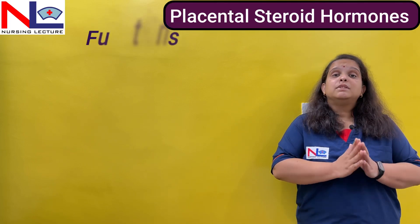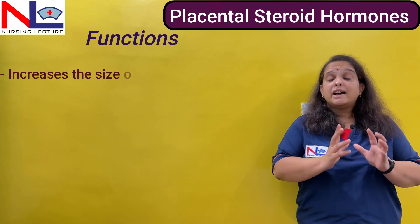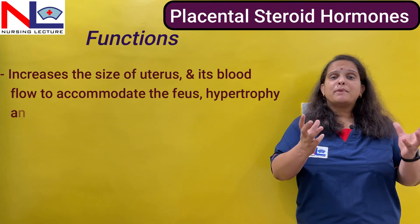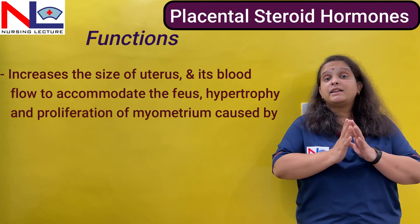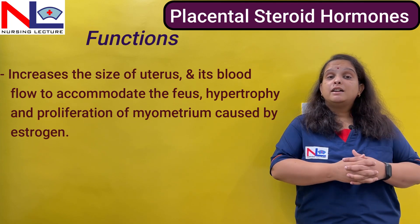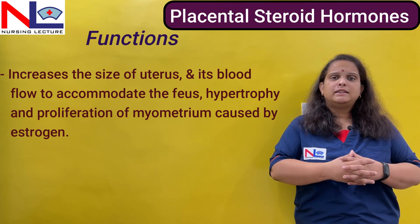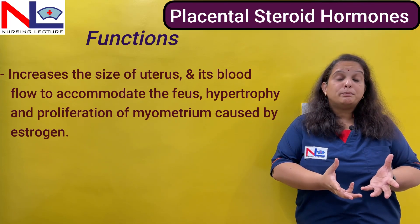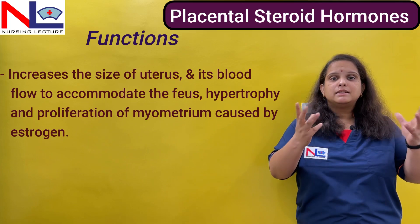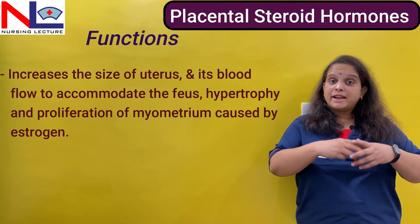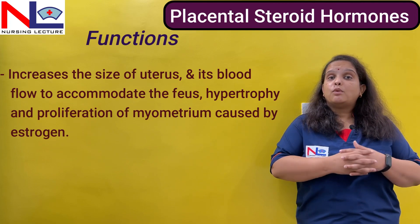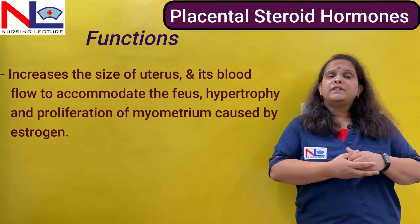Estrogen plays a very important role in the hypertrophy and proliferation of the uterus. As the fetus grows, the accommodation capacity of the uterus also increases, which is made possible by the effect of estrogen. It helps in hypertrophy — that is, increasing the size of the muscle fibers of the uterus — and also proliferates these muscle fibers so the uterus becomes bigger to accommodate the products of conception. Estrogen also helps in increasing uterine blood flow, as the vasculature expands to meet the demands of the growing fetus.